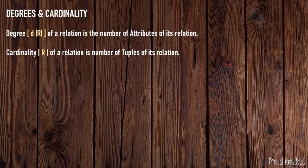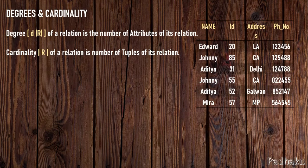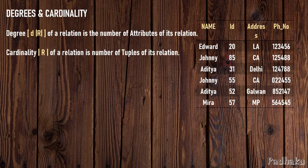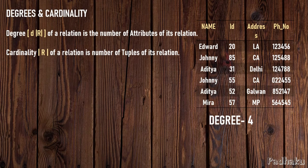Let me take an example to make degree and cardinality clear. Suppose this is a table — if you watch carefully, you can find that there are four columns and six rows. Columns are attributes and rows are tuples. So the number of columns, or attributes, is the degree of that relation table. There are four columns, so the degree is four. There are six rows, so the cardinality is six.